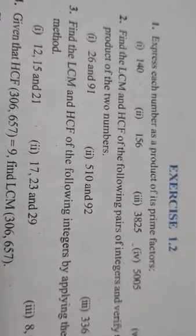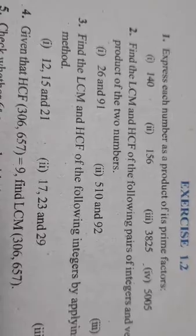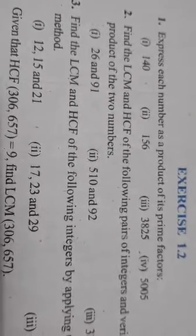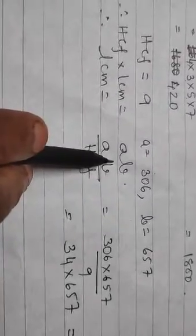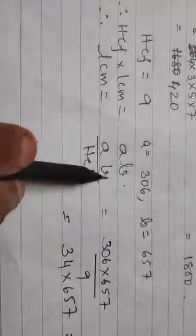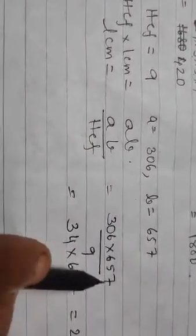The fourth question: HCF of 306 and 657 is given as 9. Find LCM. Use the rule: HCF × LCM = A × B. So LCM = A×B ÷ HCF. 9×34 = 306, so 34×657 gives 22338. Therefore LCM = 22338. That is how you work out the fourth question.